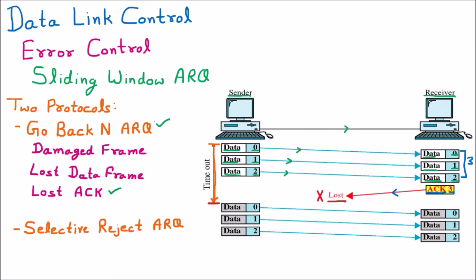Once the timeout occurs, the sender goes back N from the last sent packet, which was packet 2. Going back N means going back to where the timer started, which was packet 0. So the sender retransmits data 0, data 1, and data 2, because it is aware that either these packets or the acknowledgement was lost. The receiver receives the same copies of these packets again but can discard the duplicate copies. This is how Go Back N ARQ works for a lost acknowledgement.